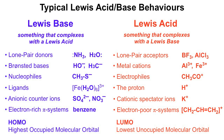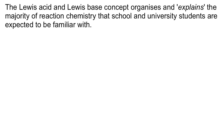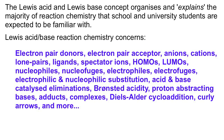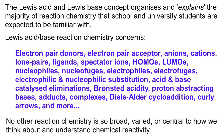The Lewis acid and Lewis base concept organises and explains the majority of reaction chemistry that school and university students are expected to be familiar with. Lewis acid-base reaction chemistry concerns electron-pair donors, electron-pair acceptors, anions, cations, lone pairs, ligands, spectator ions, LUMOs, HOMOs, nucleophiles, nucleofuges, electrophiles, electrofuges, electrophilic and nucleophilic substitution, acid and base-catalysed elimination, Brønsted acid acidity, proton-abstracting bases, adducts, complexes, Diels-Alder cycloaddition, curly arrows, and more. No other reaction chemistry concept is so broad, so varied, or so central to how we think about and understand chemical reactivity.